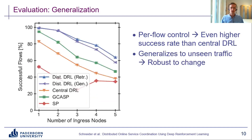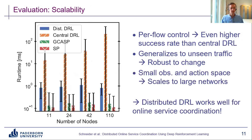Our approach also generalizes well to unseen traffic patterns, is robust to sudden changes in load or traffic pattern, and scales well to large scenarios. The centralized approach slows down with increasing network size, whereas our distributed approach is completely invariant to network size, meaning it can scale well to large networks.